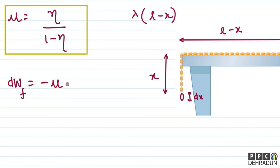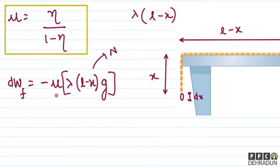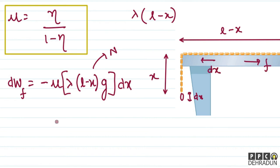dWf = -mu × lambda × (L - x) × g × dx. The friction force acts to the right but displacement is to the left (dx), hence the negative sign. So integrating this gives the overall work done by friction.